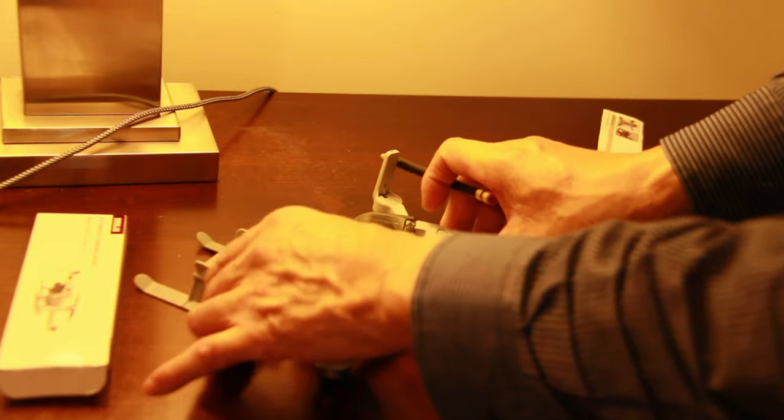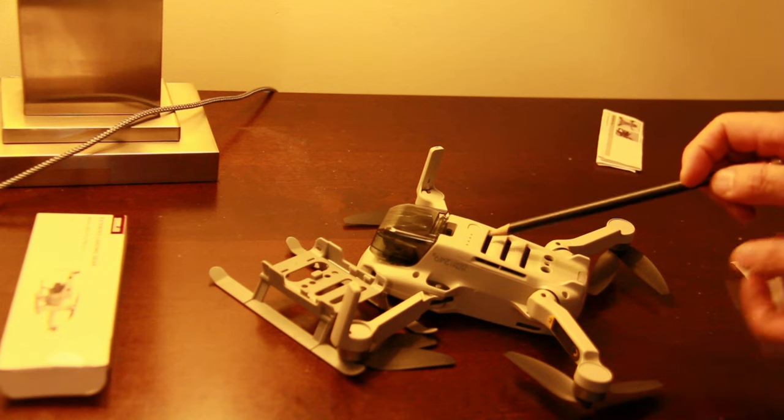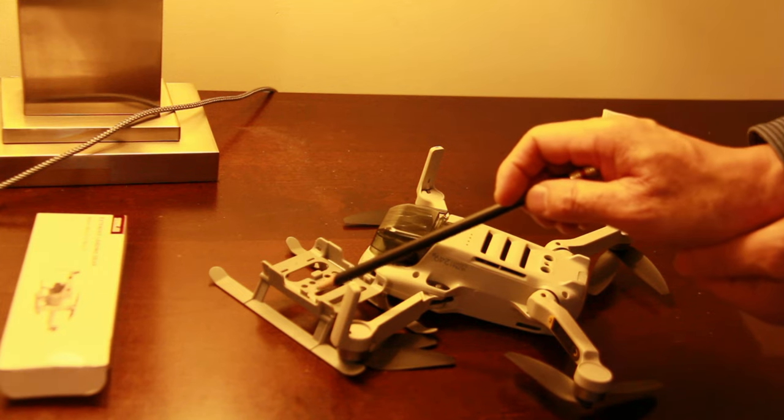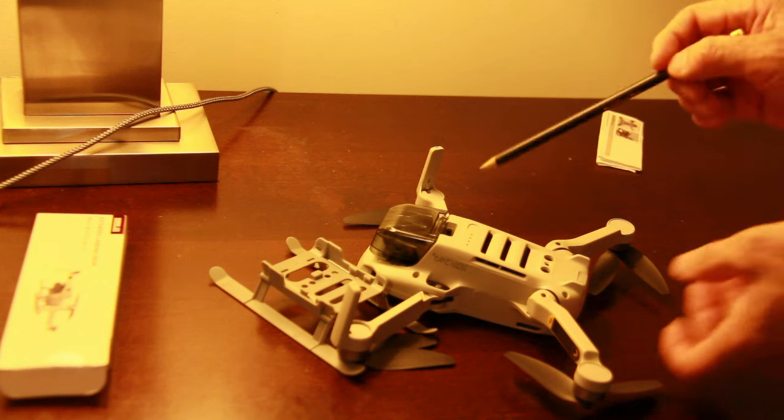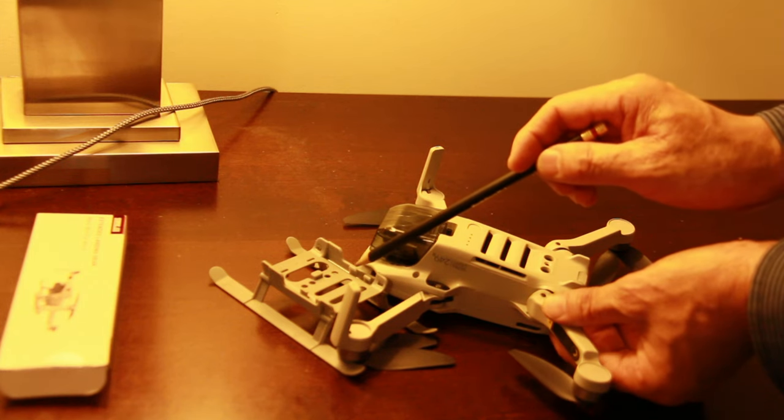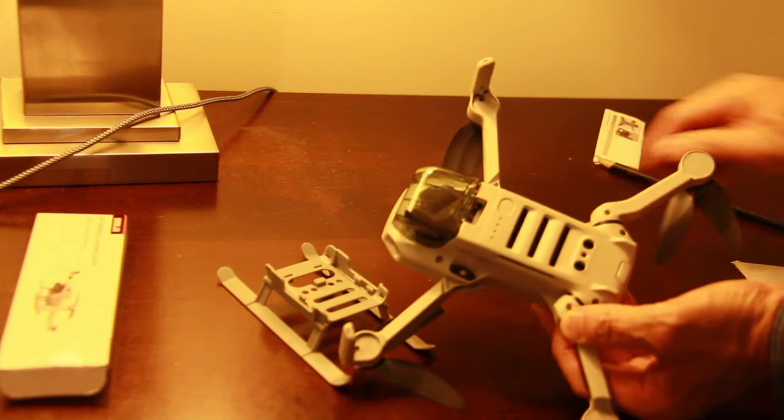For this middle hook, it should be aligned to this groove. These two side hooks align to these two side grooves. This right side, the hooks will go into these two grooves. Let's do it.